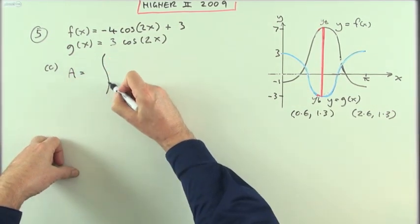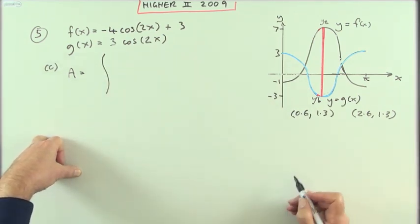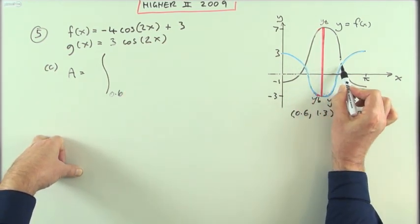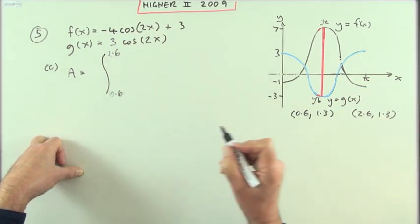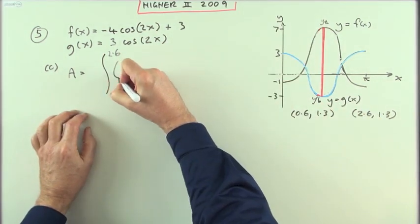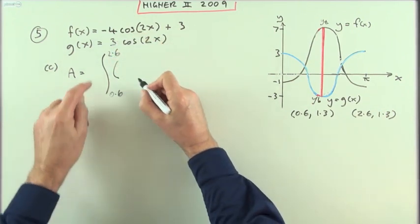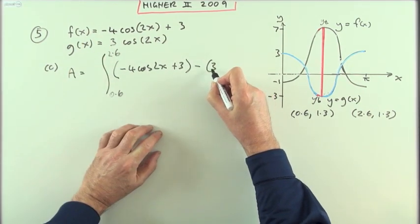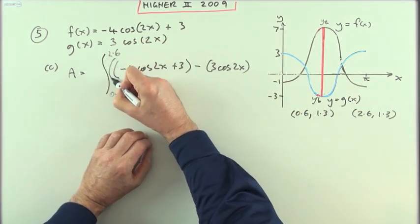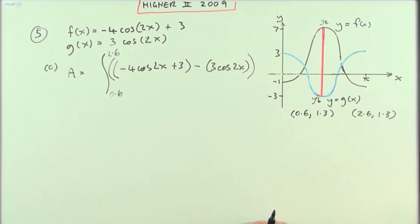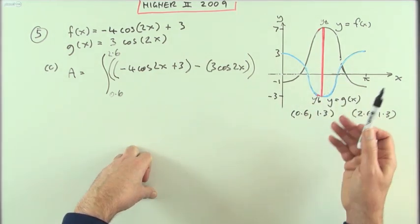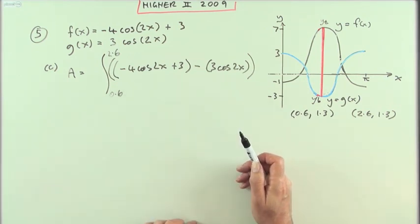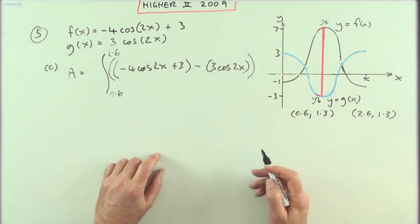So the area is given by the integral — the elongated S for summation of all those strips — from 0.6 up to 2.6, of the heights of those strips. The top was negative 4cos(2x) plus 3, and from that subtract the bottom, which is 3cos(2x). I've already put those two parts together when finding the points of intersection, but I need to set it up carefully here to make sure I don't get it the wrong way around.